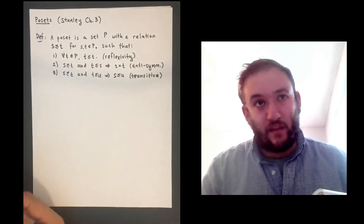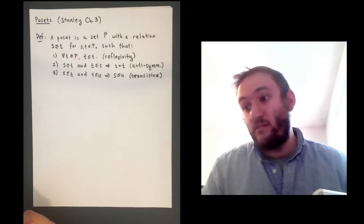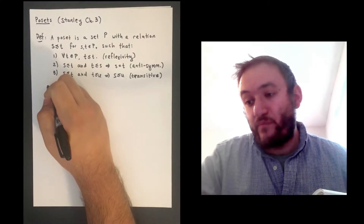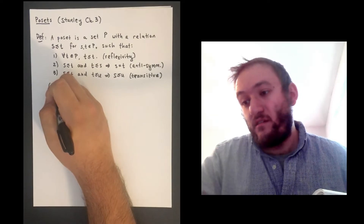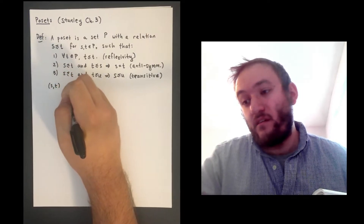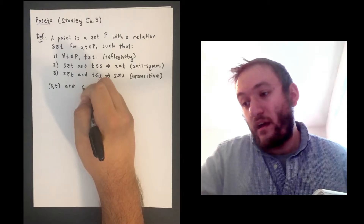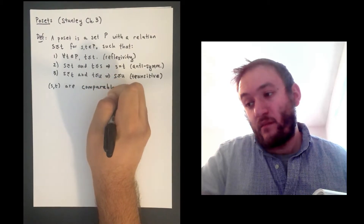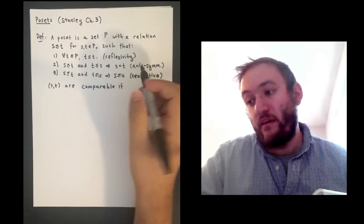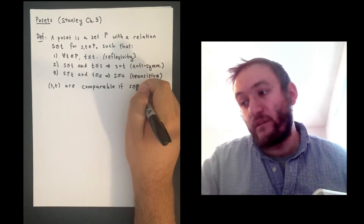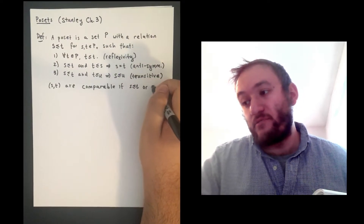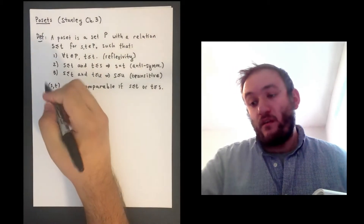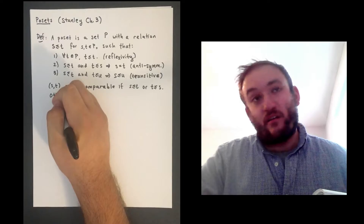Not every pair of elements has to be related by this inequality relation. We say that s and t are comparable if one of the following is true: s is less than or equal to t, or t is less than or equal to s. Otherwise, we say they are incomparable.